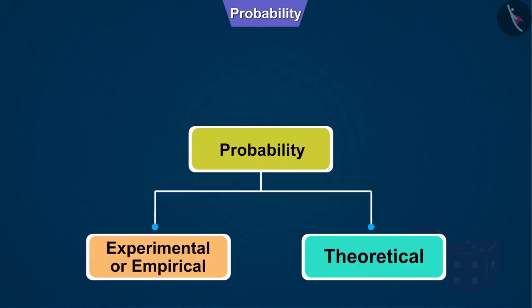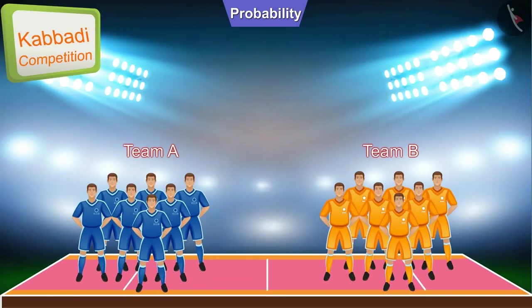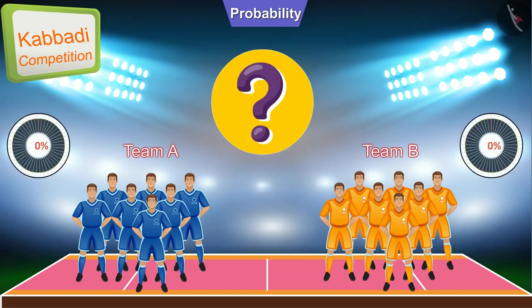Suppose a Kabaddi match is going to happen between Team A and Team B. At the beginning of the game, we do not know anything about the past performance of both teams. In such a situation, if we have to predict which team will win, then we can say that both have a 50-50% chance of winning.